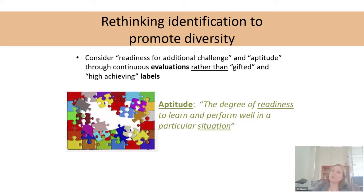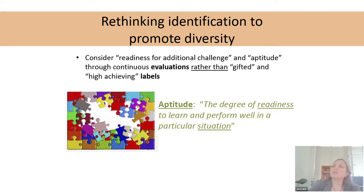English learners, of course, are learning English — it's right in the title. It's very important that we understand their ability to learn language and to make sense of language, identify the students who will learn English more quickly than others, and identify students who need more support to learn English. I like to talk about aptitude in terms of puzzle pieces — it's the fit between the individual and the situation. Aptitude is not something the student just always has; it's something about the situation.